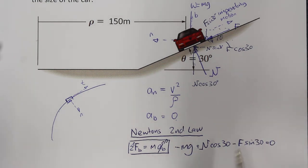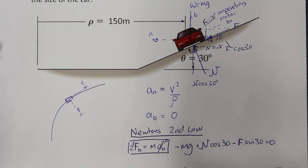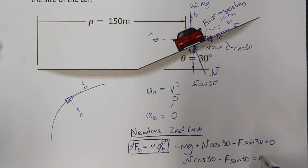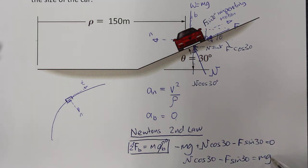Rearranging this gives us: N·cos30° minus F·sin30° equals m times 9.81. This is equation number one.